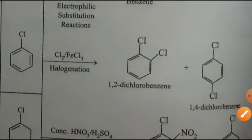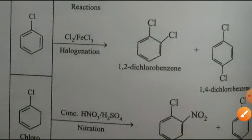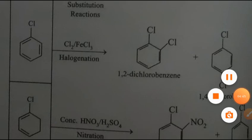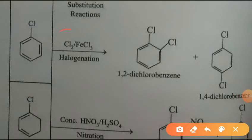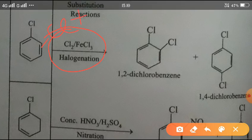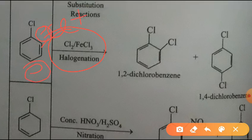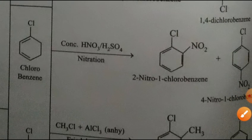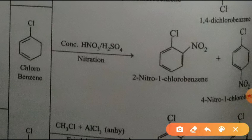Next is the electrophilic substitution reaction (ESR). Chlorobenzene undergoes ESR at a faster rate. It is ortho-para directing, so Cl⁺ attacks where there is negative charge due to resonance, which is at the ortho and para positions. So we get two products: 1,2-dichlorobenzene and 1,4-dichlorobenzene. With HNO₃ and H₂SO₄ (the nitrating mixture), nitration gives NO₂ at the 2 and 4 positions.